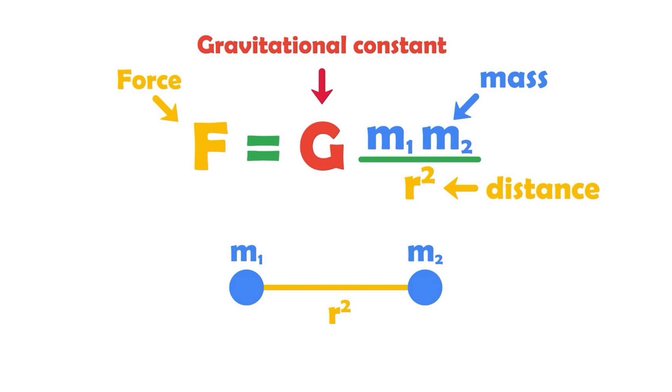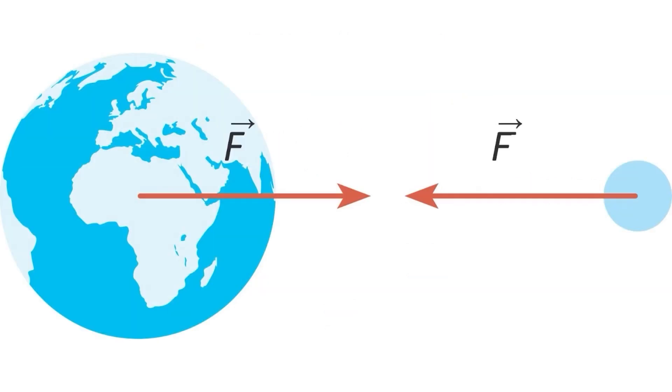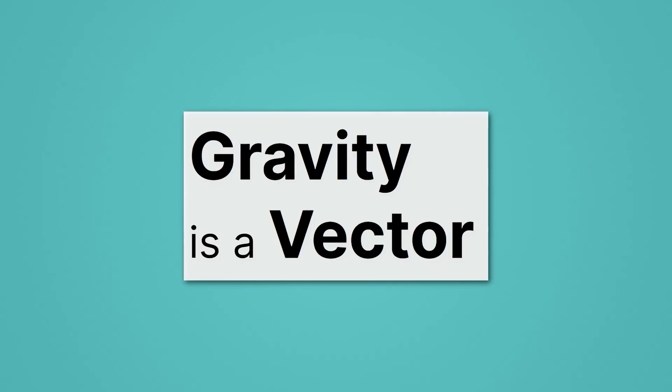For example, like the force between, say, planet Earth and the moon. Here you can see arrows representing the strength of that force and the direction it's pointing. And that's an important point to remember about gravity. The force of gravity is a vector.